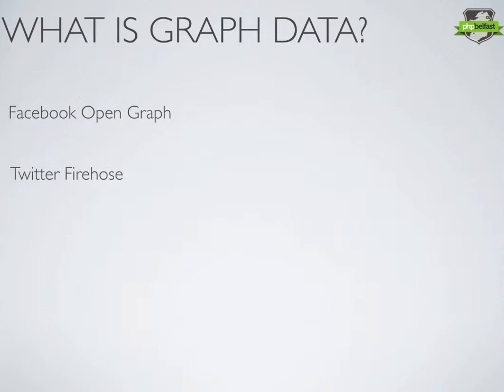Similarly, the Twitter firehose can be plotted as a graph database really effectively. Graph databases are very commonly used for big data — and I know it's a buzzword that gets thrown around by the media all too freely. But realistically, when we're talking about big data, we're talking about highly unstructured data where it's difficult to define the relationships, or not all relationships between similar entities are actually the same.